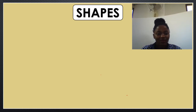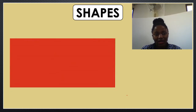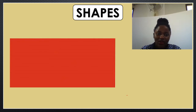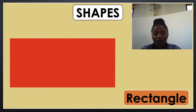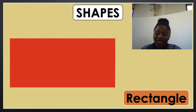Number one, we have this. Do you know the name of this shape? How do we call this shape? Great! It is called rectangle. Rectangle. Rectangle. One more time: rectangle.